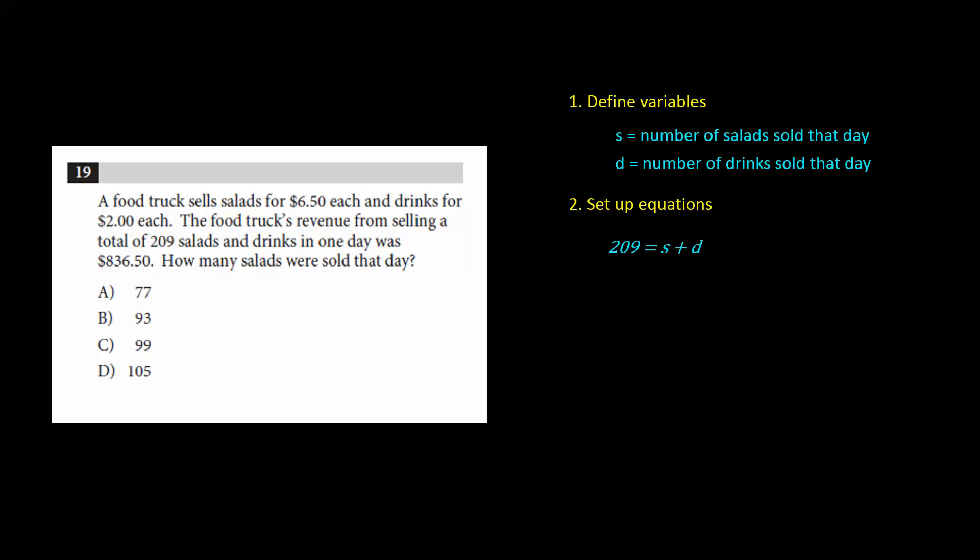We also know that the total revenue that day is $836.50. This is made up of the price of each salad, 6.5, times the total number of salads sold that day, S, plus the price of each drink, $2, times D, the total number of drinks sold that day.